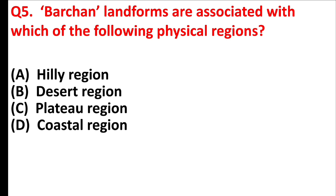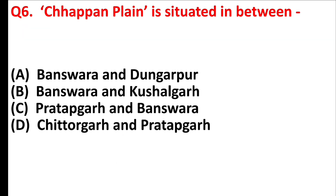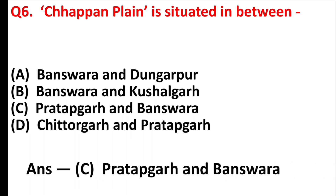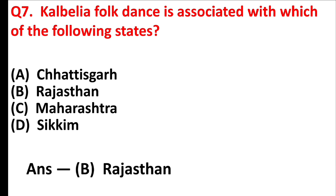Barchan landforms are associated with which of the following physical regions? Answer is Option B: Desert region. Shappan Plain is situated in between Answer is Option C: Pratapgarh and Banswara. Kalbelya folk dance is associated with which of the following states? Answer is Option B: Rajasthan.